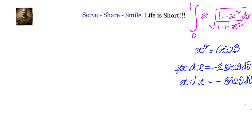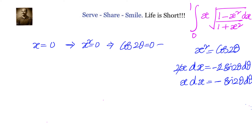Now let us look at the boundaries. When x equals 0, x squared equals 0, which means cos 2θ equals 0. That is cos 90°, so 2θ equals π/2, giving θ equals π/4. This is our lower boundary.